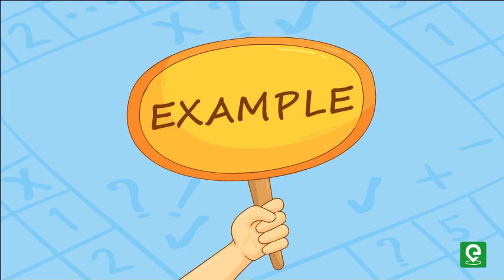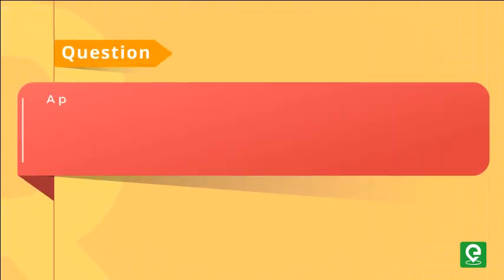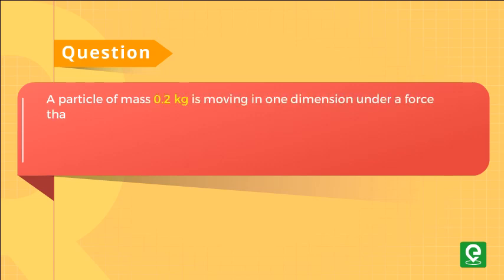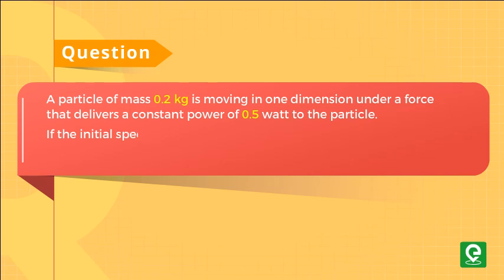understand the application of the work-energy theorem. Question: A particle of mass 0.2 kg is moving in one dimension under a force that delivers a constant power of 0.5 watt to the particle. If the initial speed in meter per second of the particle is zero, what is the speed in meter per second after five seconds? This question was asked in